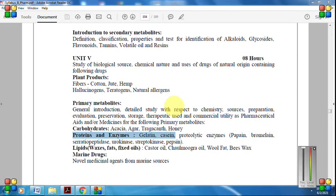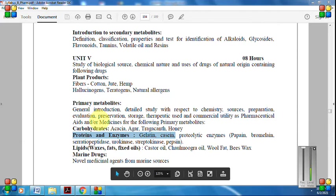Welcome to the next video tutorial of pharmacognosy and phytochemistry. In this video, we are going to cover yet another important topic of unit number five: proteins. In our syllabus, we have two proteins - gelatin and casein. Let's start with the basic introduction of proteins, then we will go for gelatin and casein.